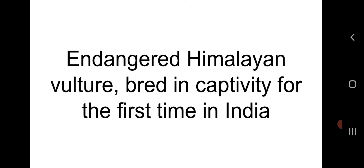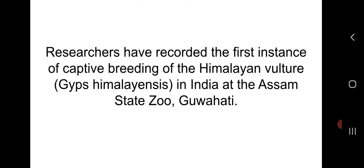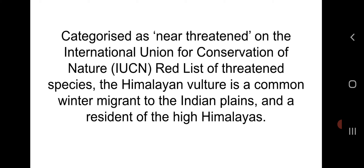First related topic: endangered Himalayan vulture bred in captivity for the first time in India. Researchers have recorded the first instance of captive breeding of the Himalayan vulture (Gyps himalayensis) in India, at the Assam State Zoo. Categorized as 'near threatened' on the International Union for Conservation of Nature (IUCN) Red List of Threatened Species, the Himalayan vulture is a common winter migrant to Indian plains and a resident of the high Himalayas.